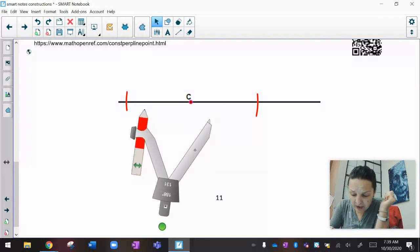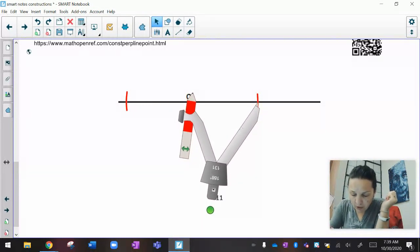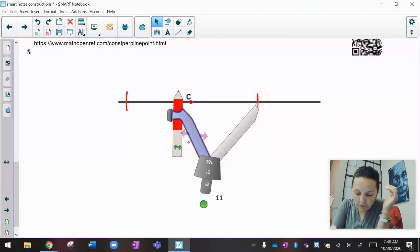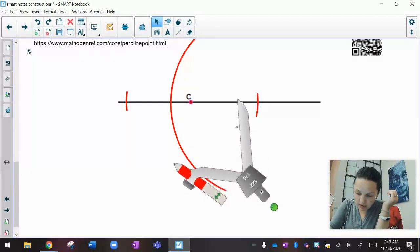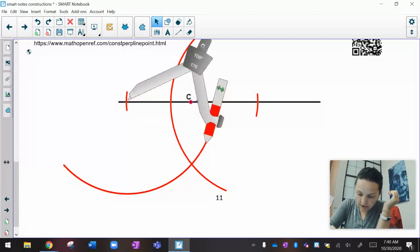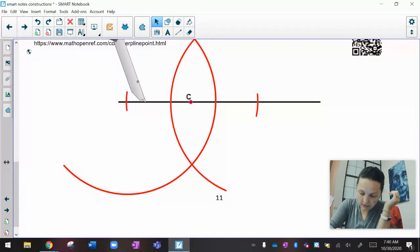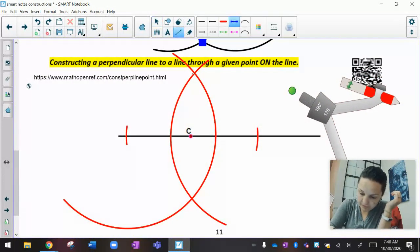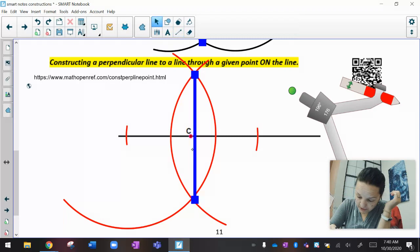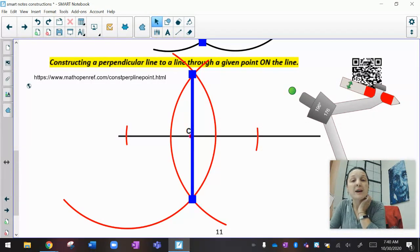Last time what we did is we then moved the pokey part of the compass to that point and drew some more arcs. The problem is if I do that now, they're not going to intersect. So when the point is on the line for your second markings, you have to open this up a little bit more and then draw one big arc here and another arc until you hit the first one.